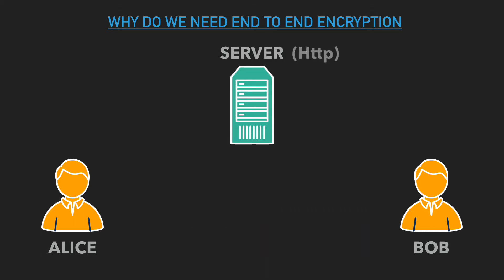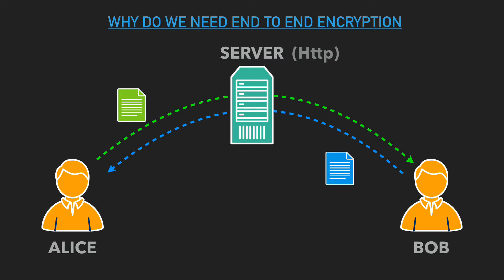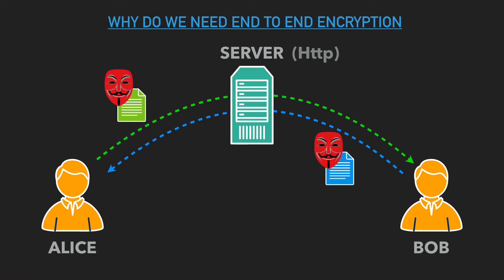Suppose we have a plain HTTP server and Alice wants to send a message to Bob and vice versa. The problem is that anyone in the middle can intercept, read, and modify those messages. To overcome this, we can switch to HTTPS with an SSL layer. Now messages are encrypted between Alice and the server, and between Bob and the server, but not directly between Alice and Bob. Anyone who attacks the server, or even the server admin, can still read those messages — so they are not truly end-to-end encrypted.